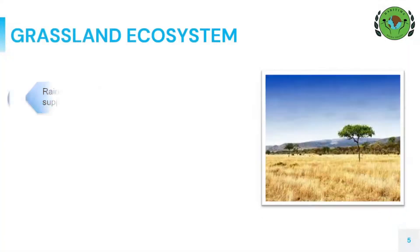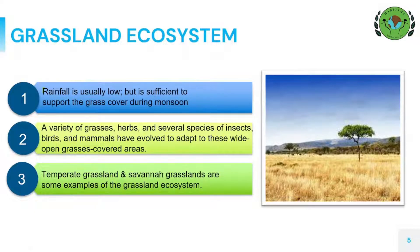The second type of terrestrial ecosystem is grassland ecosystem. Grassland includes areas where rainfall is generally low or where soil depth and quality are poor. Low rainfall prevents large numbers of trees and shrubs from growing but is enough to support grass cover growth during monsoons. A variety of grasses, herbs and several species of insects, birds and mammals have evolved to adapt to these wide open grass-covered areas. Temperate grasslands and savannah grasslands are some examples of the grassland ecosystem.